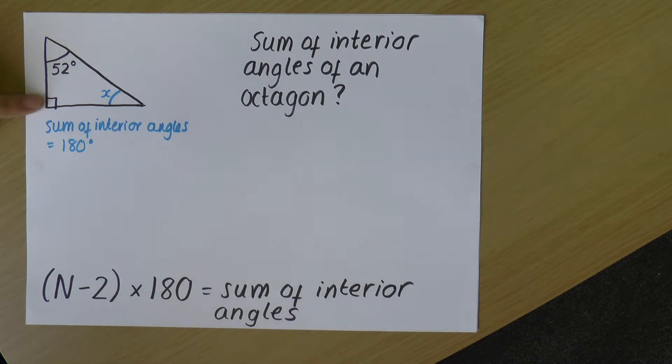Now, this angle doesn't have a degrees value attached to it. But as you can see, this is a right angle triangle and this is a right angle. I can tell because it's square, not curved like these other ones. And that means that that is an angle of 90 degrees. So right angles are always 90 degrees. So now I have two of my three angles in this triangle.